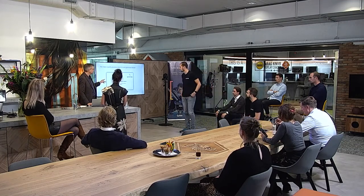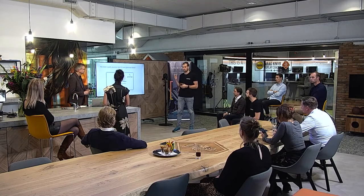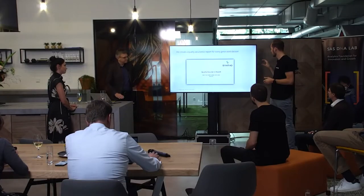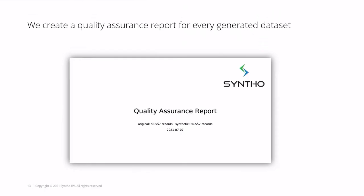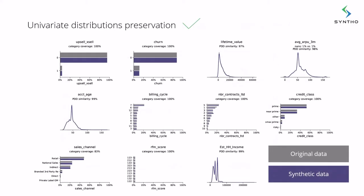Do you want to talk about the output first before we show it? Basically, this is a question we receive frequently. What we typically do is deliver a data quality report for every synthetic data set we generate. That report includes various statistics like distributions, correlations, and multivariate distributions to indicate data quality, comparing the original data with the synthetic data.